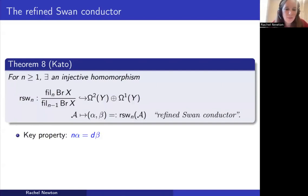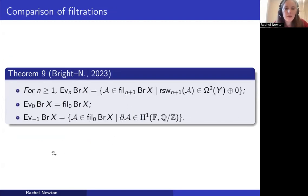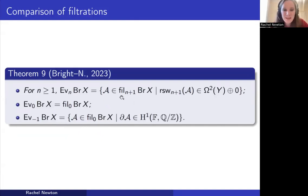A key property we'll return to: if (α, β) is the refined Swan conductor at level n of some element A in the nth piece of Kato's filtration, then Kato shows that n · α = dβ. Here is our comparison statement from the work with Bright: for n ≥ 1, the nth piece of our evaluation filtration F_n consists of those elements in Fil_{n+1} of Kato's filtration whose refined Swan conductor at level n+1 has β = 0.